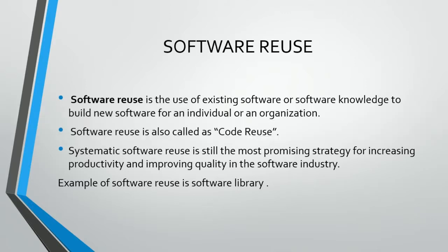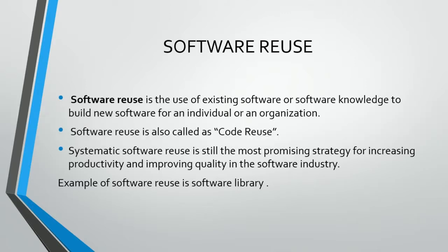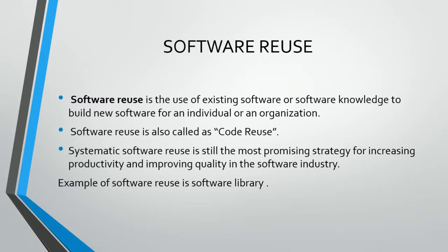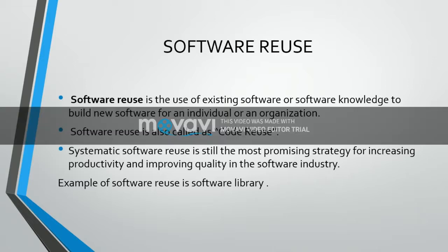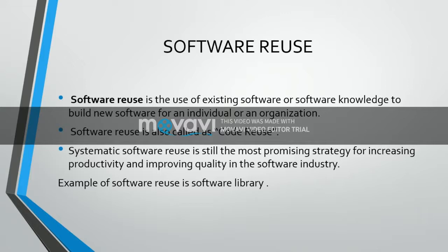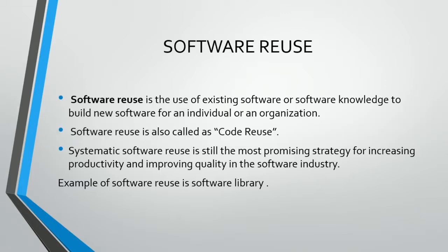Software reuse is the use of existing software or software knowledge to build new software for an individual or an organization. When you receive a requirement, you first search for reusable components — whether this kind of project has been done before — and based on that review, you can do software reuse. Software reuse is also called code reuse, mainly focusing on the design aspect and the coding aspect. Systematic software reuse is the most promising strategy for increasing productivity and improving quality in the software industry. An example of software reuse is a software library like Java — we always import a library function like import java.io.*, which is the best example of software reuse.